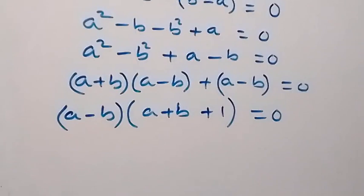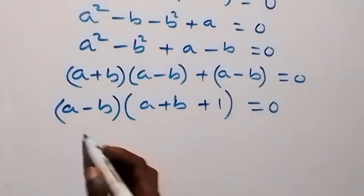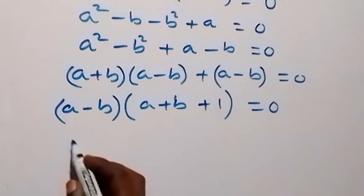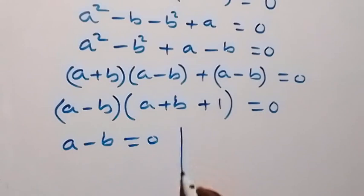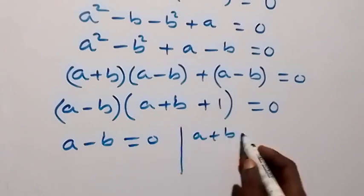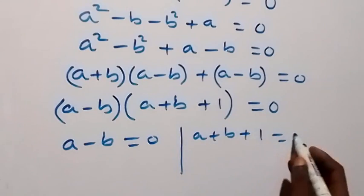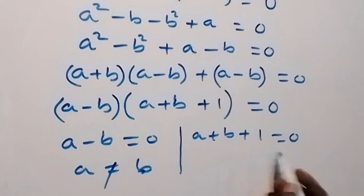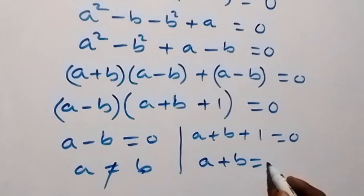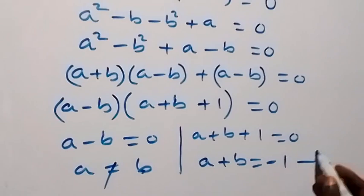The product of two numbers equals 0, so either of these could be 0. We have a minus b equals 0, or we have a plus b plus 1 equals 0. From the first case a equals b, but we already established that a is not equal to b. So from the second case, taking 1 to the other side, we have a plus b equals minus 1. Let this be equation 3.